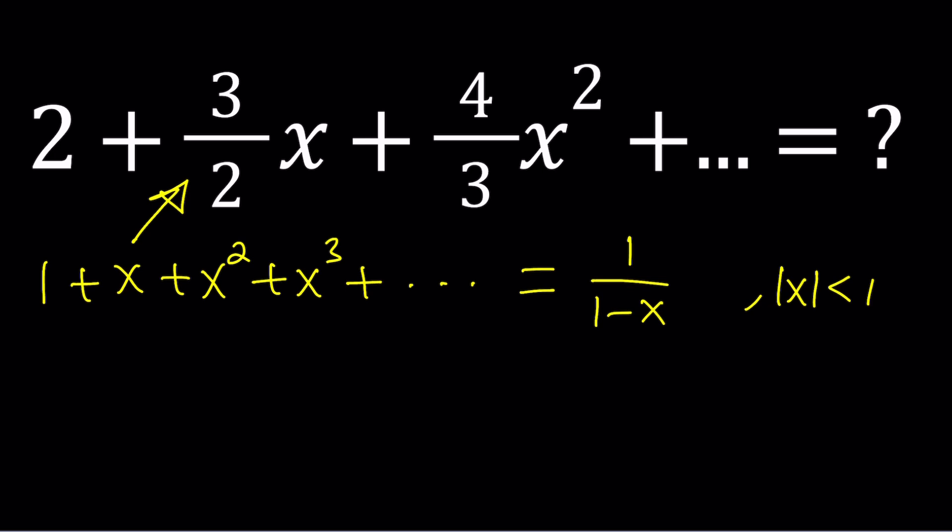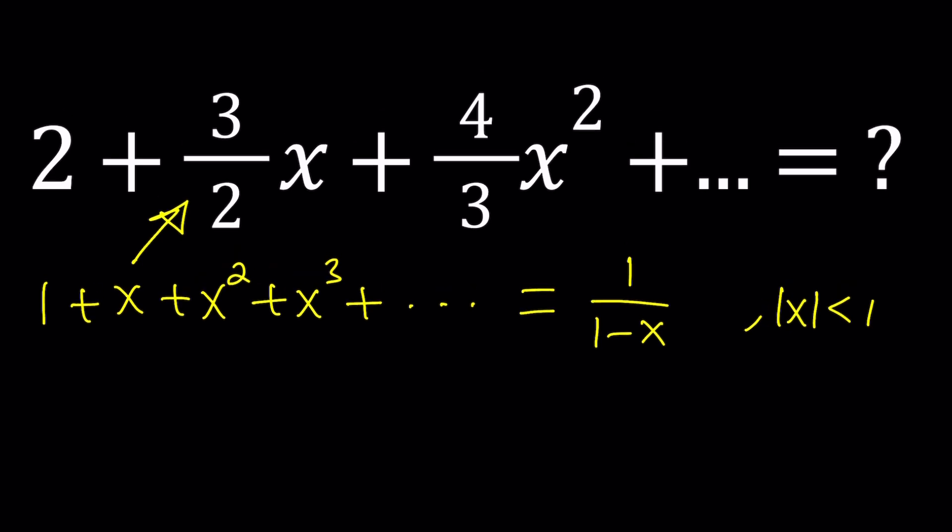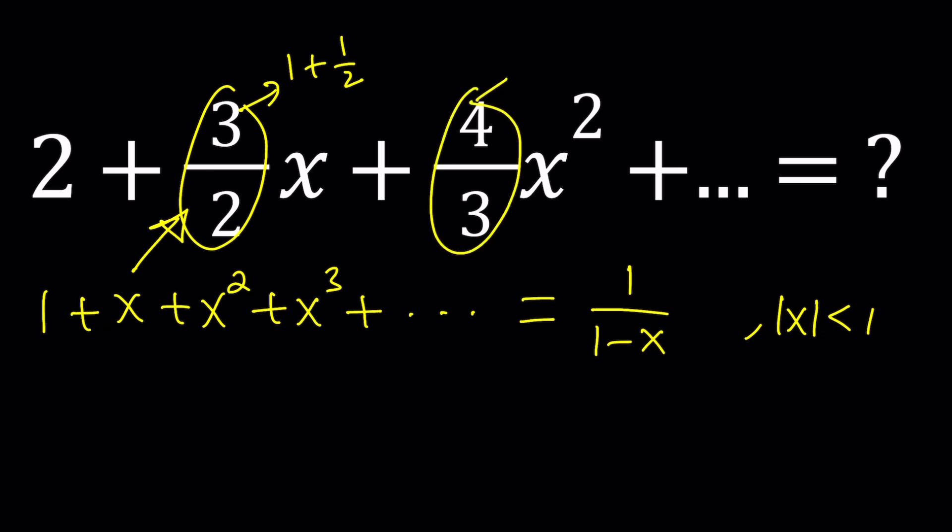Looking at these two series, one has always a coefficient of 1, but in the original one, the coefficients are different every time but have a common pattern. For example, 3/2 can be written as 1 + 1/2, 4/3 can be written as 1 + 1/3, the next one is 5/4 which is 1 + 1/4. We are basically adding 1 to the reciprocal of positive integers.